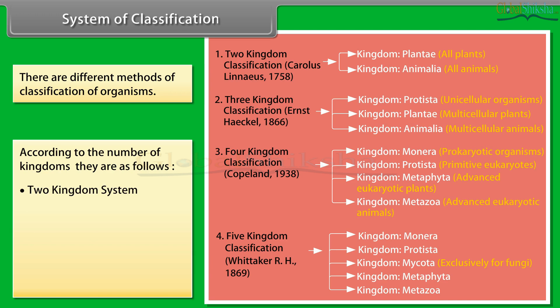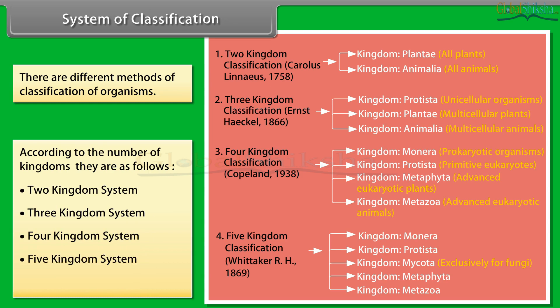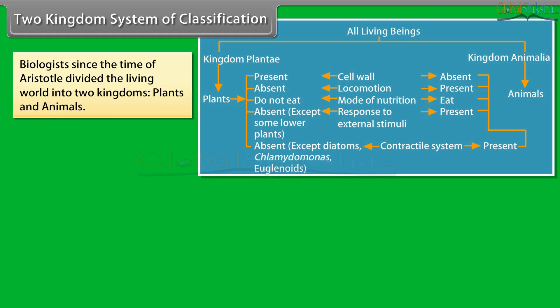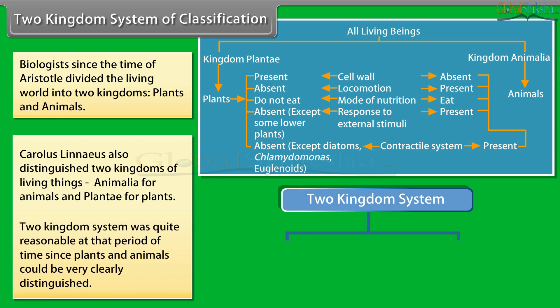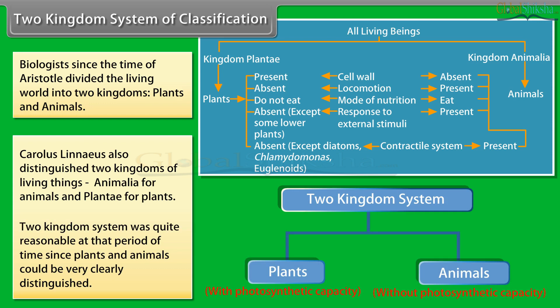In the two kingdom system of classification, biologists since the time of Aristotle divided the living world into two kingdoms: plants and animals. Carolus Linnaeus also distinguished two kingdoms — Animalia for animals and Plantae for plants. The two kingdom system was quite reasonable at that period of time since plants and animals could be very clearly distinguished.